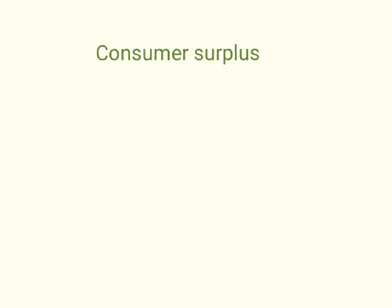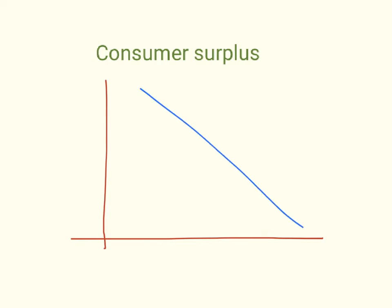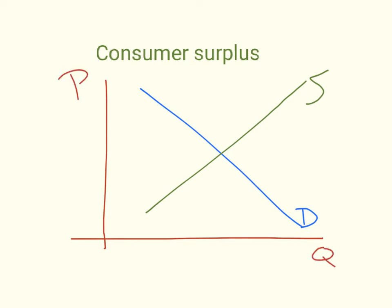You might get some multiple choice questions that ask whether consumer surplus is rising if demand or supply increase. Let's graph a downward sloping demand curve and an upward sloping supply curve, with price on the vertical axis and quantity on the horizontal axis. We can graph the consumer surplus as the triangle between the demand curve and the equilibrium price line.